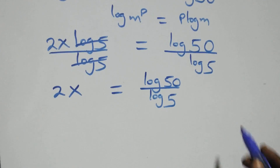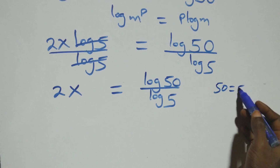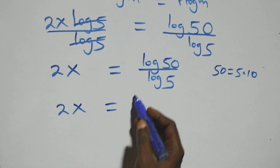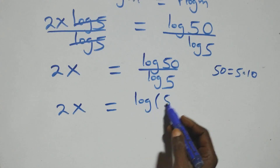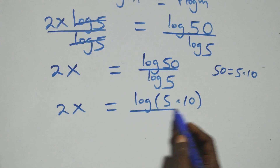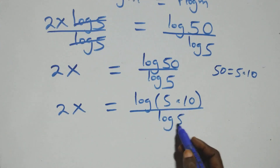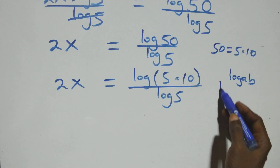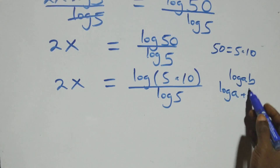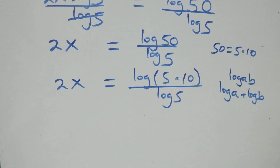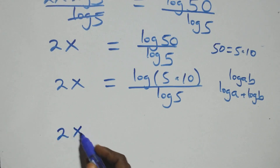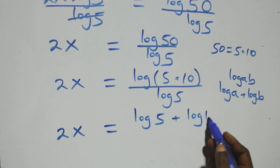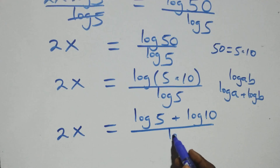From here we can rewrite 50 as 5 times 10, which implies what we have becomes 2x equals log of 5 times 10, over log 5. This follows the log product rule: log of a times b is the same as log a plus log b, so we get 2x equals log 5 plus log 10, all over log 5.